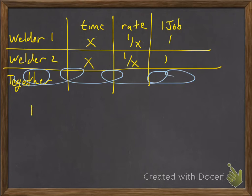So the rate of each of these welders is going to be 1/X. And then X times 1/X is going to be one job. What I'm going to do is cross out the together part, because they're not working together the entire time. But we're going to use the idea of rate times time.